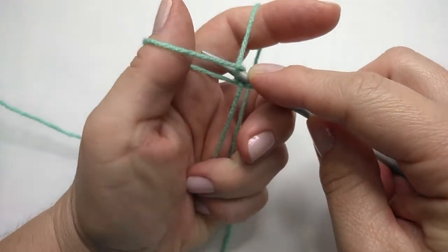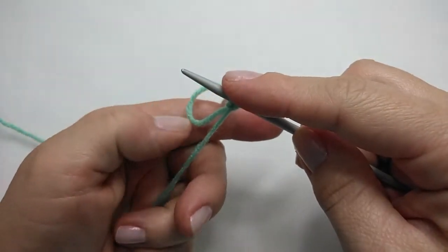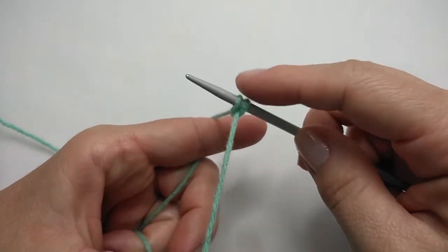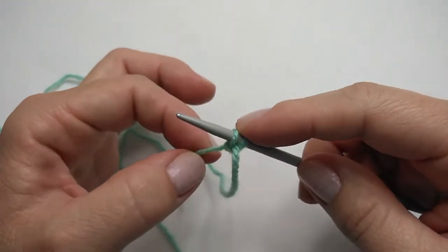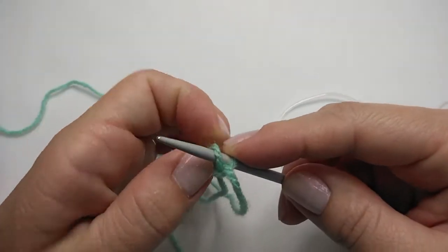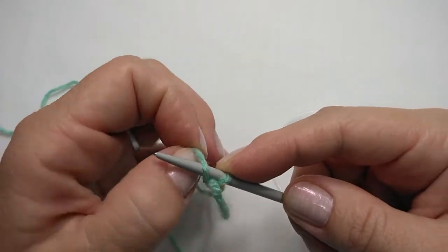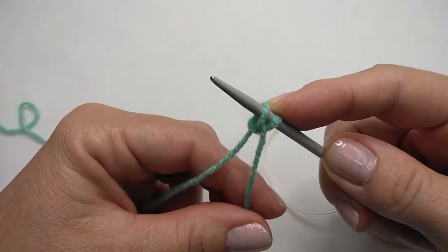We're going to take our needle underneath the first strand on the thumb, grab the yarn on your index finger, bring it through the loop, throw it off your thumb, take your thumb and pull that loop closed. So the stitch, if you pull on it, the stitch is formed with the yarn coming from the ball you're working on and that is what you want.